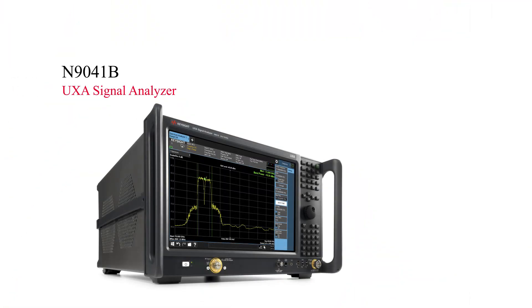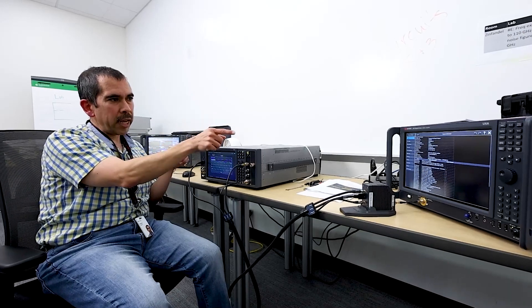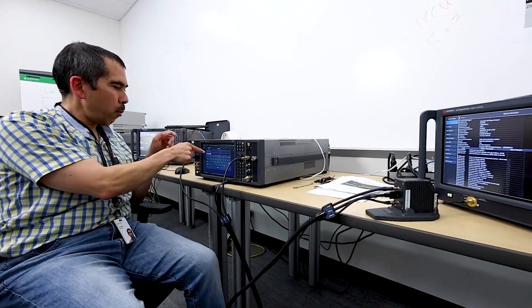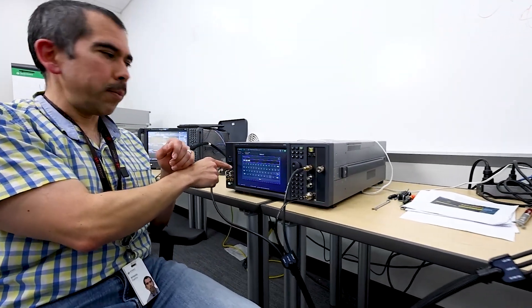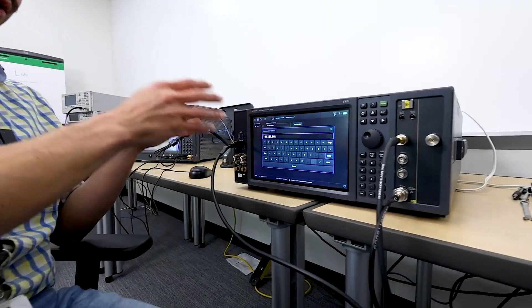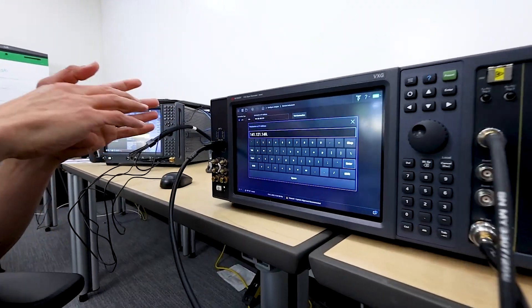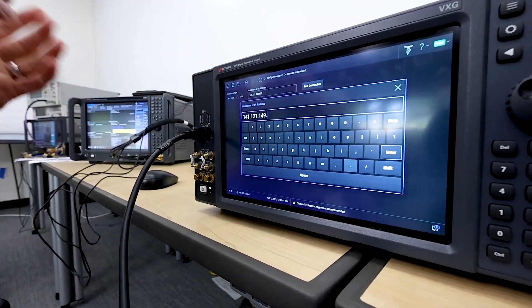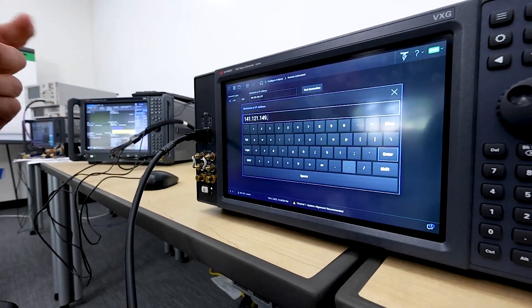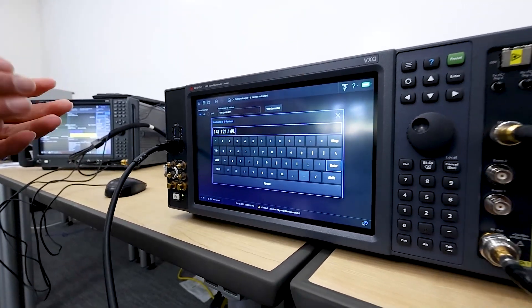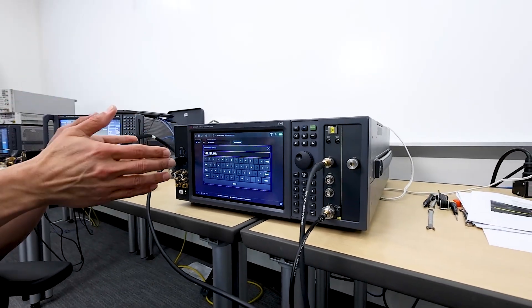So now we're going to make the same measurement that we made on the NID482B with the NID41B. So what I'm doing is taking the IP address of the NID41B and entering that into the VSG. Therefore, when I configure the signal analyzer, the VSG will set up the NID41B to demodulate the signal that I generated in the VSG.